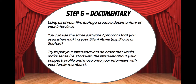Step 5 is the documentary. Using all of your film footage — including footage of you interviewing your puppet as well as your puppet interviewing different people about being in lockdown — you need to create a documentary. Use the same software you used for your silent movie, such as iMovie or Shotcut, since you've already learned how to use it. Try to put your interviews into an order that makes sense, such as chronological order, starting with the puppet's profile interview.